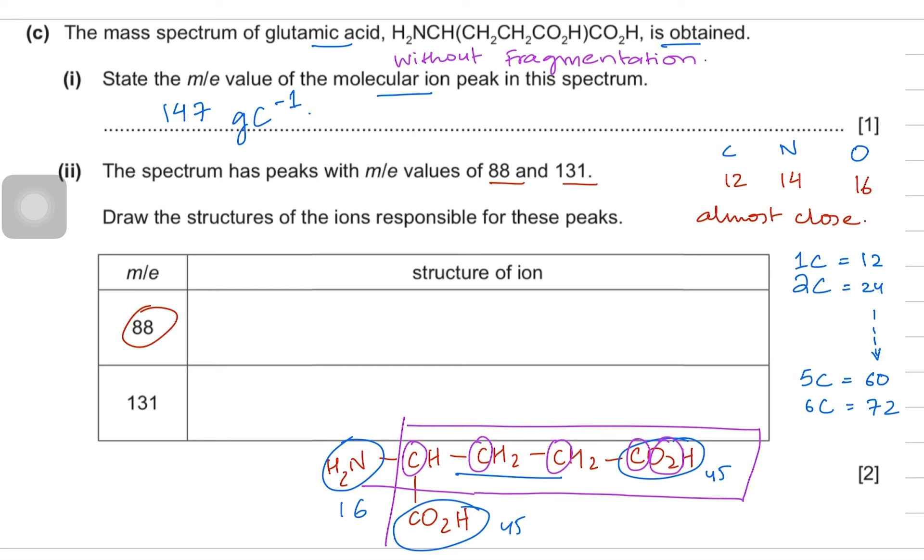If you count the mass of this fragment, the one in the purple box, you can see that there are CH groups so 12 plus 1, then a CH2 so 12 plus 2, another CH2 and a carboxylic acid which is 45 units. It turned out to be 86 not 88, so that is not the best fragment here. Let's try some other fragment.